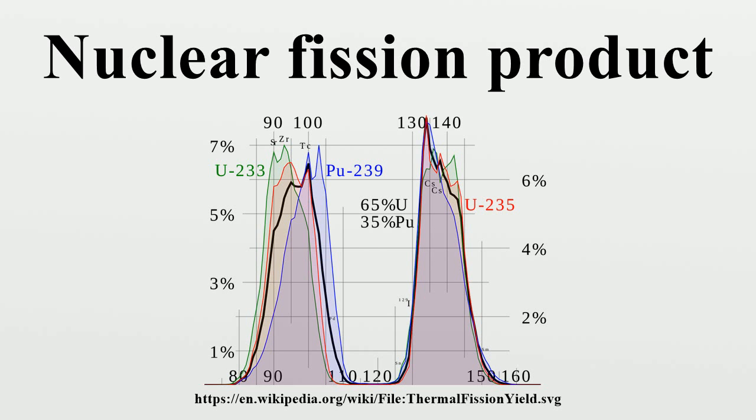Because of the stability of nuclei with even numbers of protons and/or neutrons, the curve of yield against element is not a smooth curve but tends to alternate. Note that the curve against mass number is smooth.